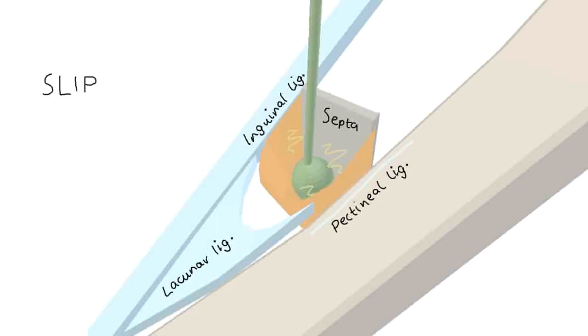These are particularly inflexible ligaments, which is a worry for us because if small bowel moves into the canal in the setting of a femoral hernia, there's a high risk of strangulation.